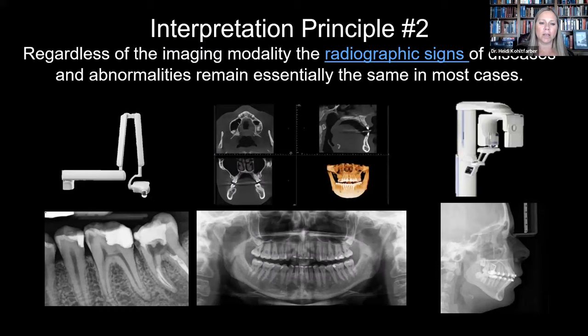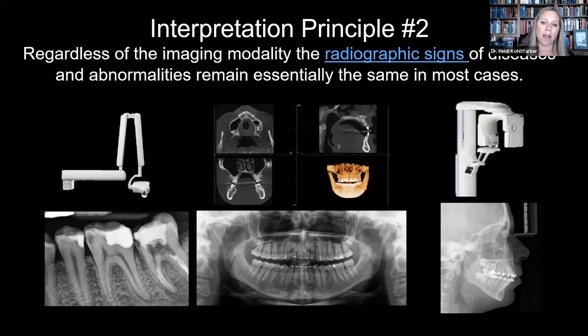Looking at various modalities, we have the independence of our radiographic signs. Regardless of whatever imaging modality you're looking at, your radiographic signs of disease remain essentially the same. If it looks like a cyst in 2D, it's going to look like a cyst in 3D. A cyst is very hydrostatic — it's well-defined, corticated, and radiolucent, or hypodense when we're talking about CBCT. It's going to look exactly the same.